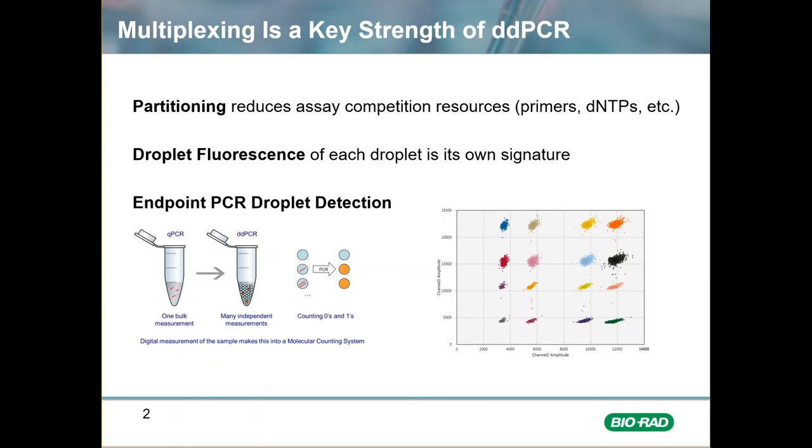Partitioning of the sample creates a unique situation where the assays do not have to compete for the PCR resources like bulk resolution multiplexing does. The more partitions, the more assays that can be multiplexed. Each droplet partition will have its own fluorescence, allowing for many more possible positive clusters to be identified clearly.